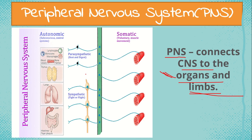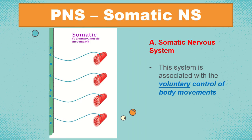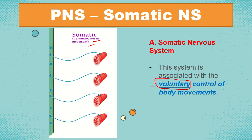Under the somatic nervous system, this system is associated with the voluntary control of body movements — meaning voluntary muscle movement. Examples include the way we walk and the way we ride. These are voluntary, meaning you can control or stop the movement of your muscles.